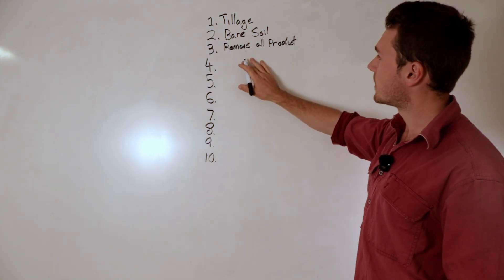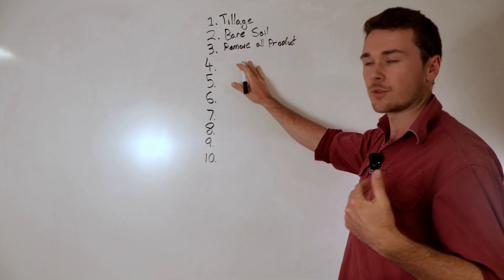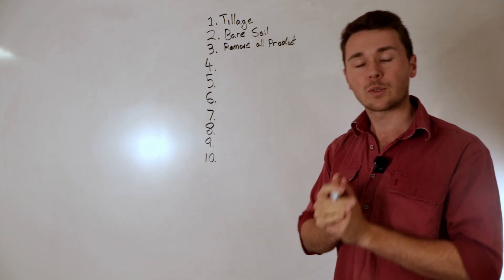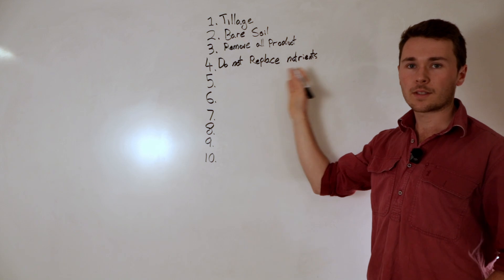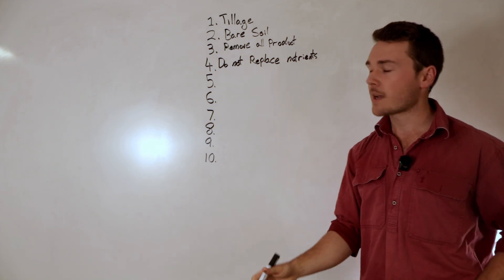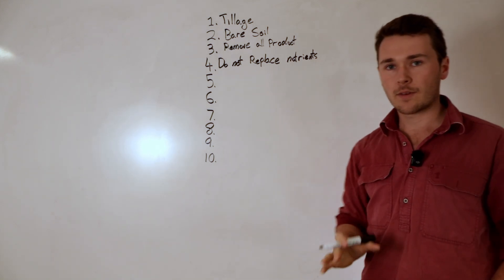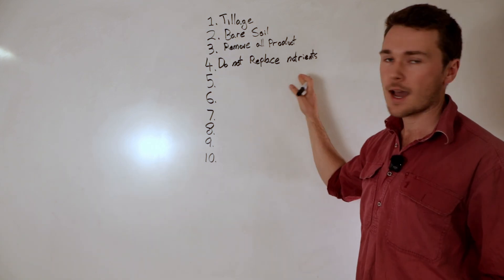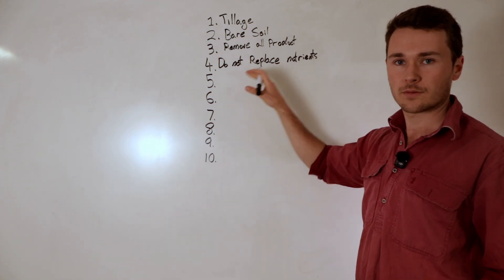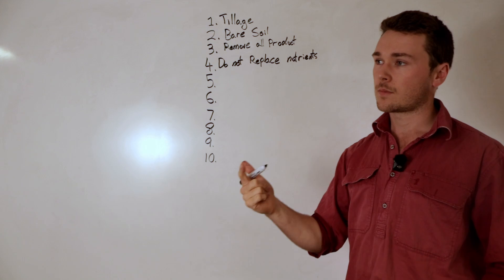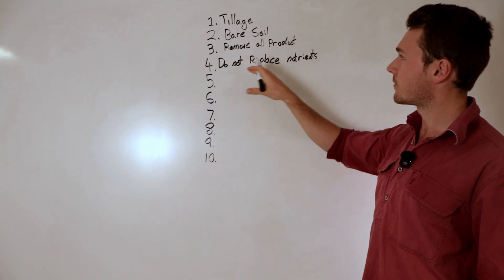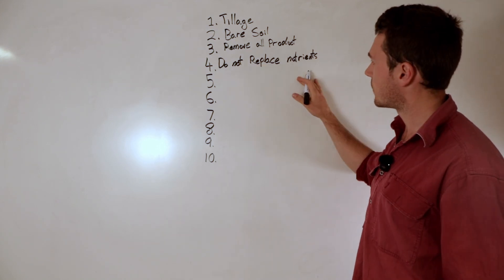So the fourth point flows on from this and it's actually not replacing those nutrients back to the soil. So effectively we just want to mine the soil as much as possible. So this way we're mining the soil, we're not putting anything back, we're going to start running down on the available minerals that we have which means we then can't properly support the following crop. So the big ones for this is calcium, potassium and phosphorus. If we can mine all those then it's a great way to continue to destroy the soil.